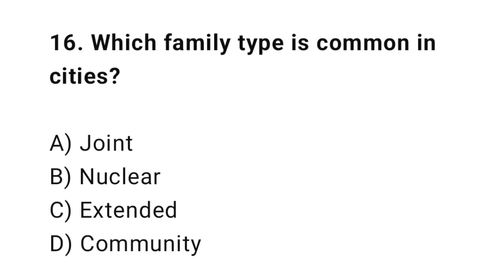Question number sixteen: which family type is common in cities? The right answer is B — nuclear. Nuclear families are small and common in urban areas.